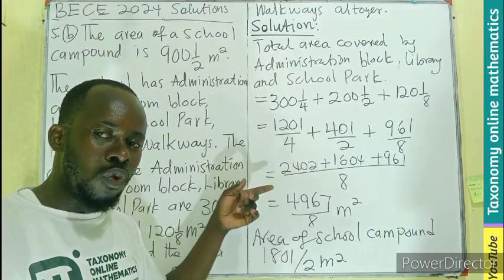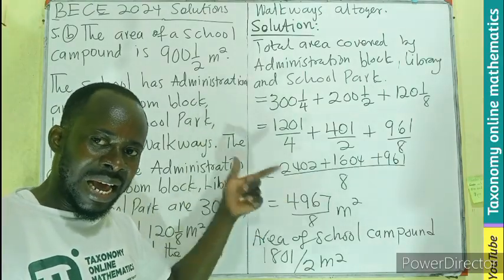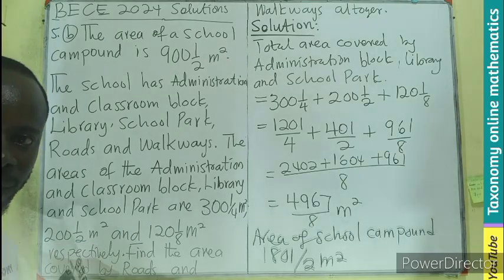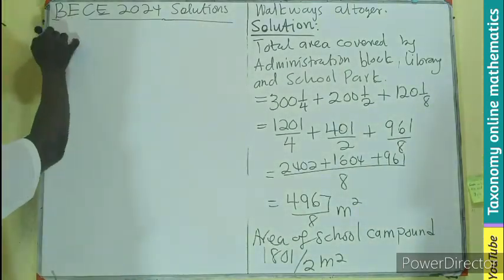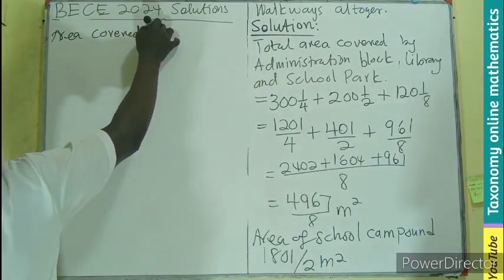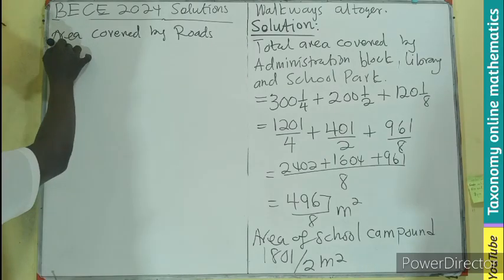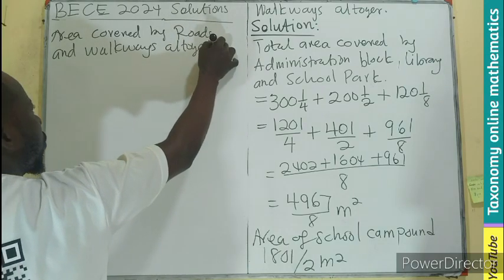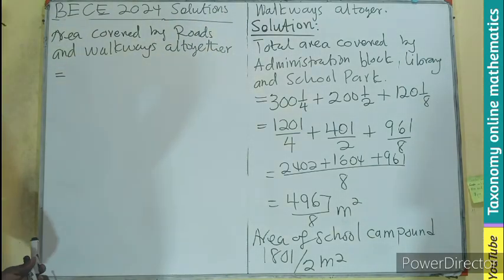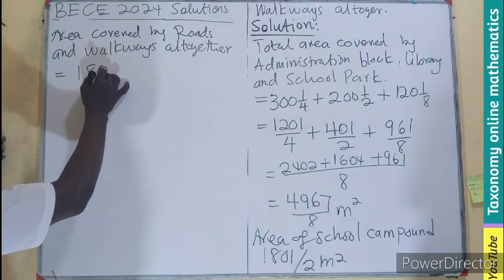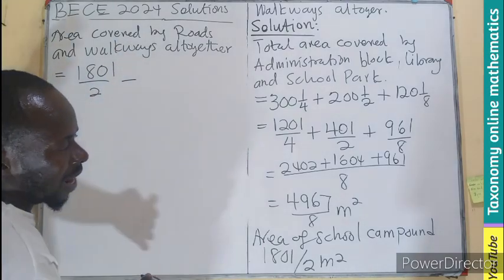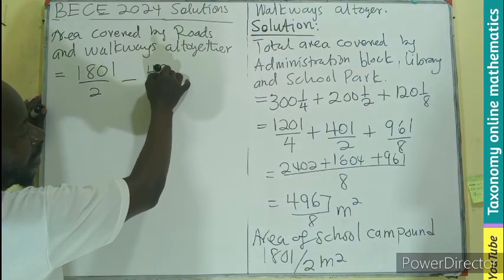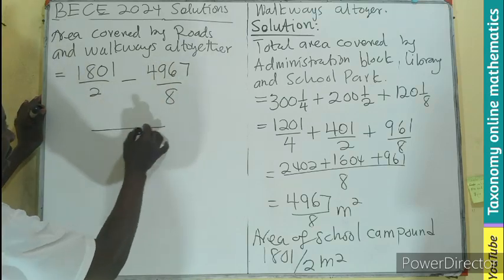So we need to take away the area of the administration block, the library, and the school park from the total school compound area, to leave us with the area of the walkways and roads. The area covered by roads and walkways is: 1,801 divided by 2, minus 4,967 divided by 8. We can get our LCM to be 8.